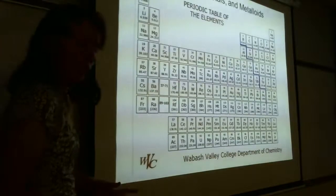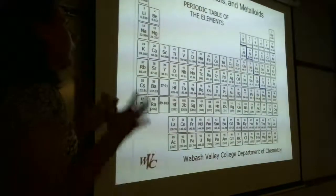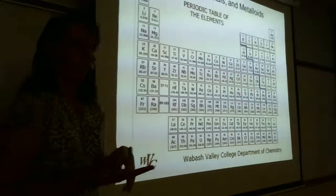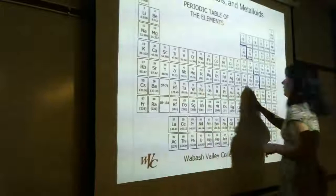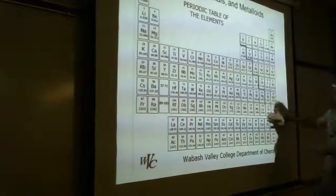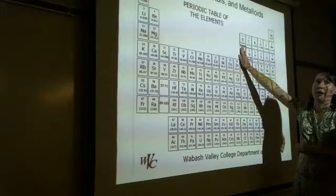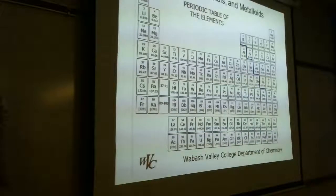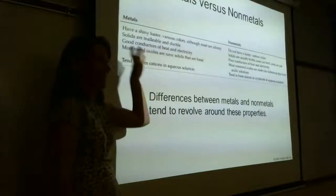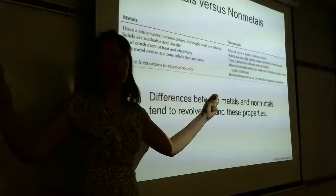This is something we've already talked about, but I want to make sure you remember where the metals are versus where the non-metals are. Everything to the left of the zigzag line on the periodic table are the metals. Everything to the right are non-metals. The ones touching that line are metalloids — they have properties of both — except aluminum, which is purely a metal. For nomenclature and writing formulas, metalloids are still considered either a metal or a non-metal.